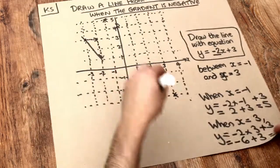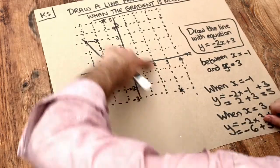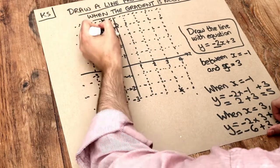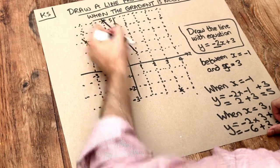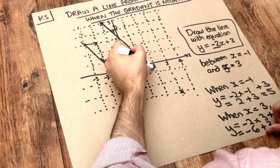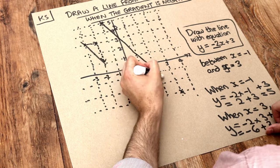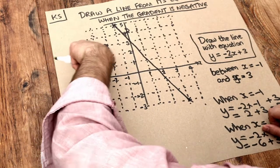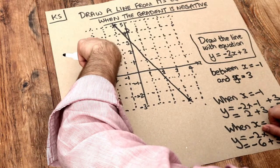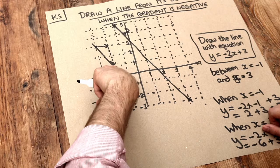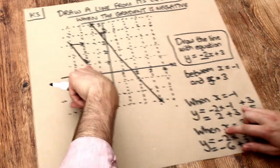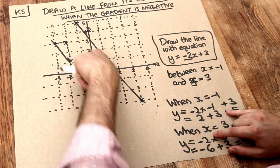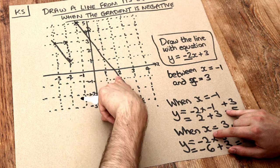And then all we need to do is just join these up with a straight line. And as I said earlier, we know that each time x increases by 1, y is going down by 2 because the gradient is minus 2. And you can see it's going down by 2 each time.